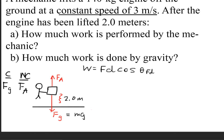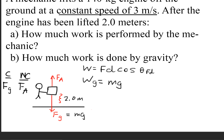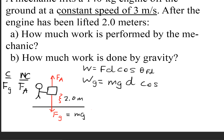Let's identify all parts of this. The key part of the question is we want the work done by gravity, so we're going to focus our attention on the force of gravity. Work done by gravity is equal to mg — because the force of gravity is the mass times gravity — multiplied by the displacement times an angle.